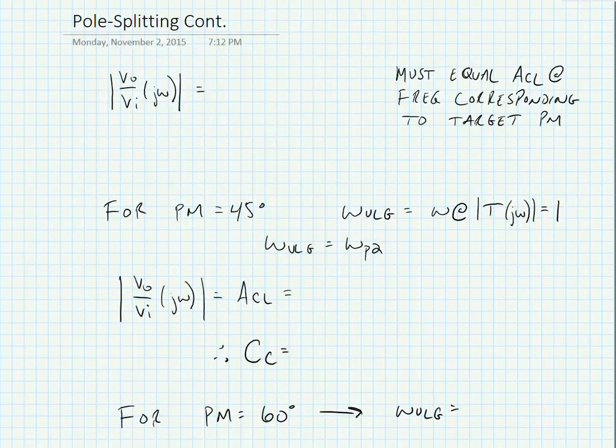Okay so we have that the magnitude of the voltage gain is equal to gm over s cc at least at high frequencies where the capacitor is very big. We must equal the closed loop gain, it must equal the closed loop gain at the frequency corresponding to the target phase margin.